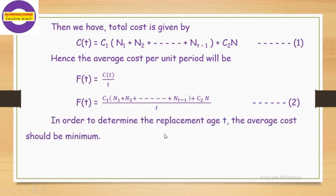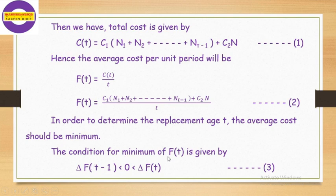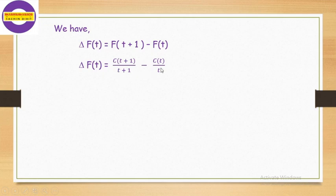In order to determine the replacement age t, the average cost should be minimum. The condition for minimum of f(t) is given by: Δf(t−1) < 0 < Δf(t), equation number 3. We apply this condition to find the optimum group replacement policy. We have Δf(t) = f(t+1) − f(t), that is Δf(t) = C(t+1)/(t+1) − C(t)/t.